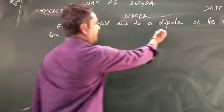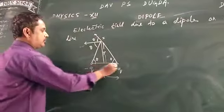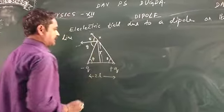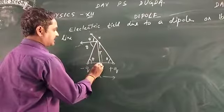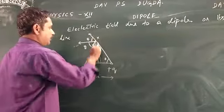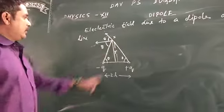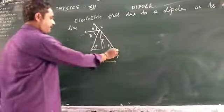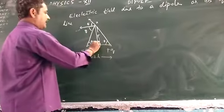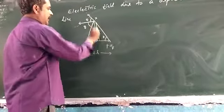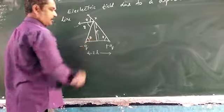Now, electric field due to a dipole on its equatorial line. This is your equatorial line, meaning the line along the perpendicular bisector. We have to find the electric field due to this dipole at a distance r from the center of the dipole, lying on the perpendicular bisector.